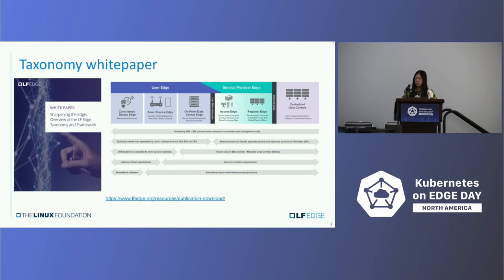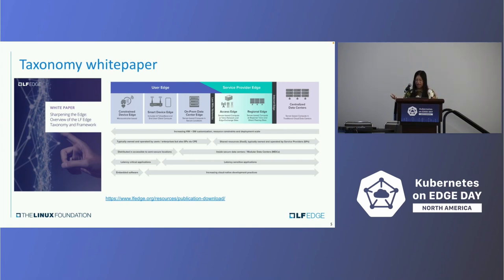ElfEdge has produced a white paper about taxonomy, which you can download directly from www.elfedge.org under resources. You can see how we sharpen the Edge and the overview of ElfEdge taxonomy and framework. It explains in detail how these different Edge tiers handle latency and embedded software across different scopes and segments.